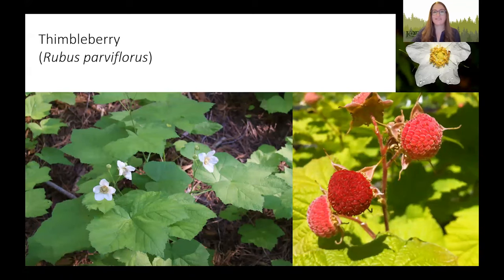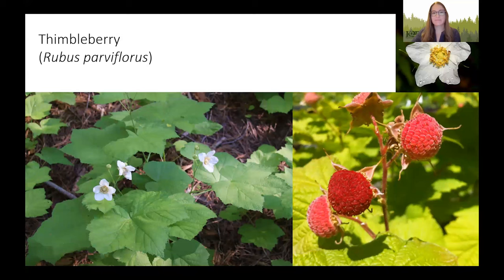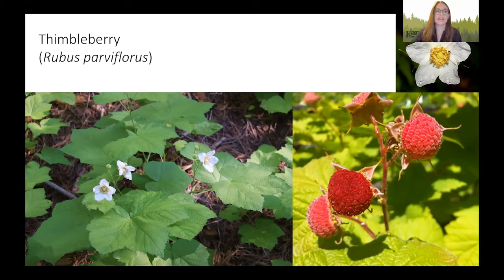Next is one of my absolute favorites — thimbleberry. It has no thorns, very soft leaves, and very tasty berries that can fit on the end of your thumb like a thimble, which is how it got its name. Native pollinators enjoy the white flowers and birds will enjoy the berries — but you may want to beat them to it because they are really delicious. This species can spread a bit from where you planted it over time, but the new stalks are pretty flexible and easy to cut if you want to keep it in its spot.